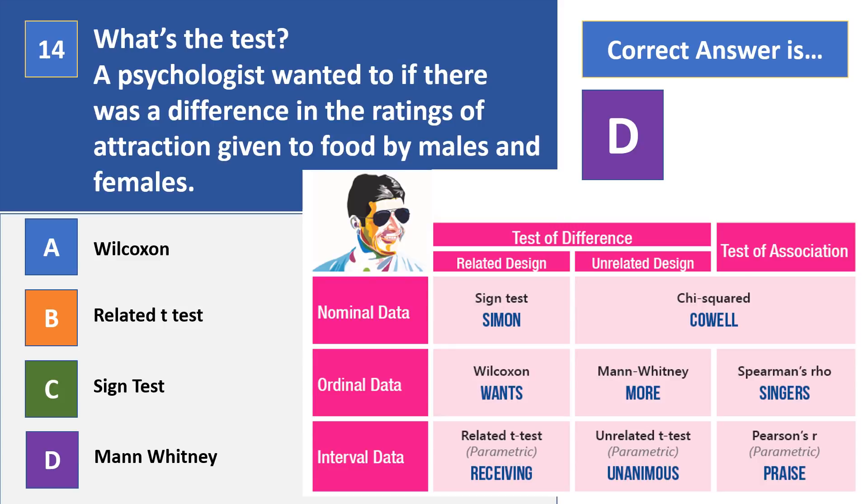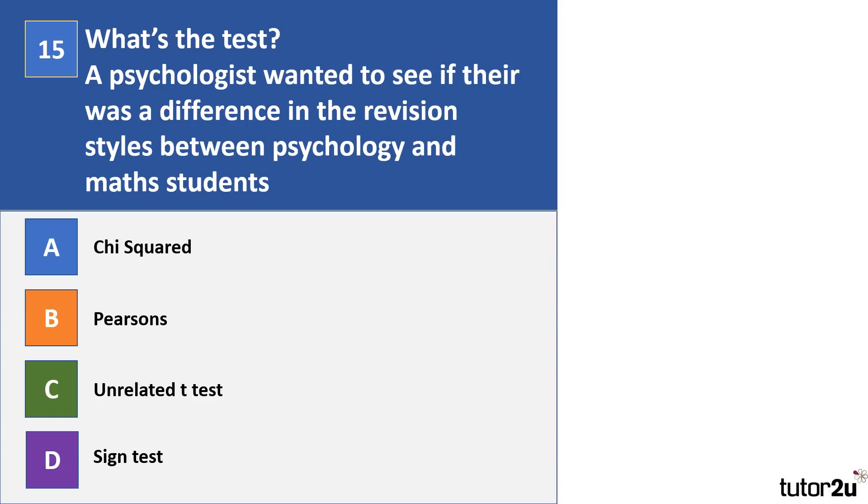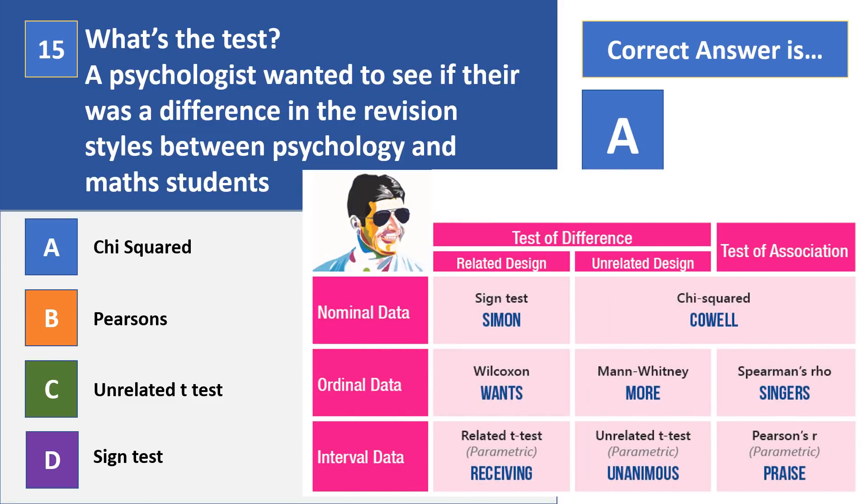Final question: What's the test here? So again, read through what you've been given and decide what the test is. Pause your video. Okay, your correct answer there is A, chi-squared.